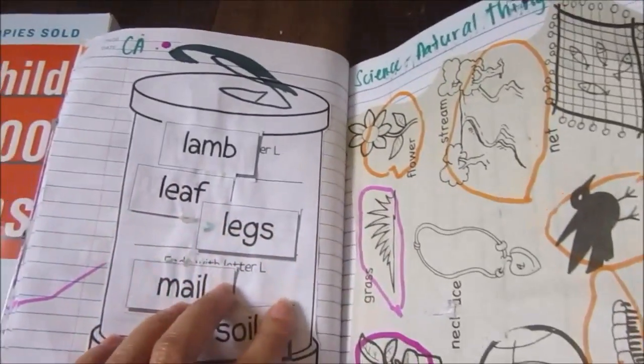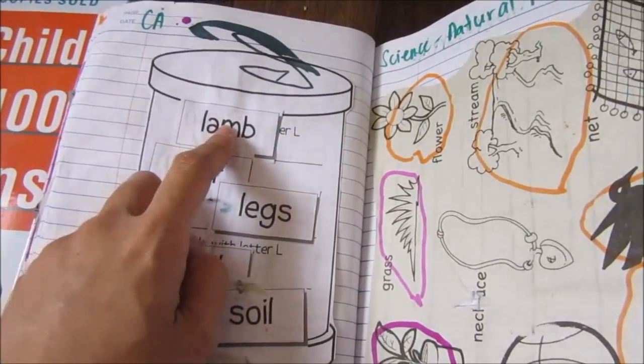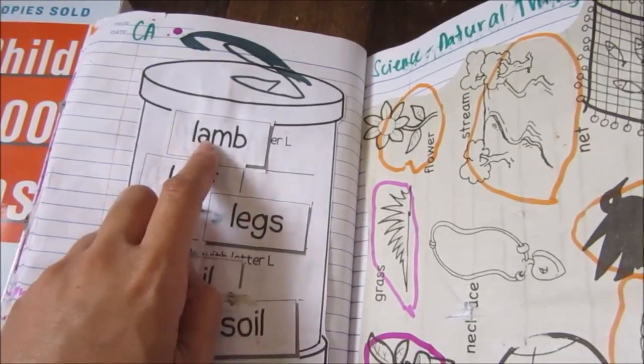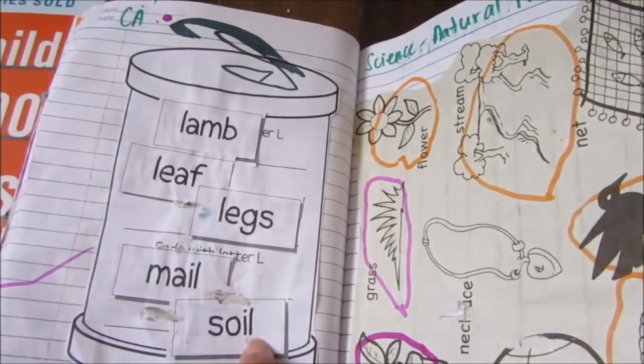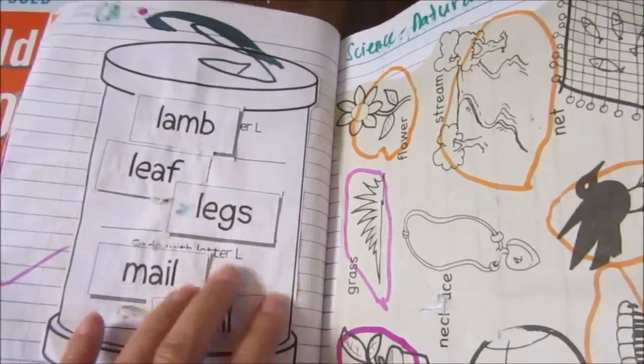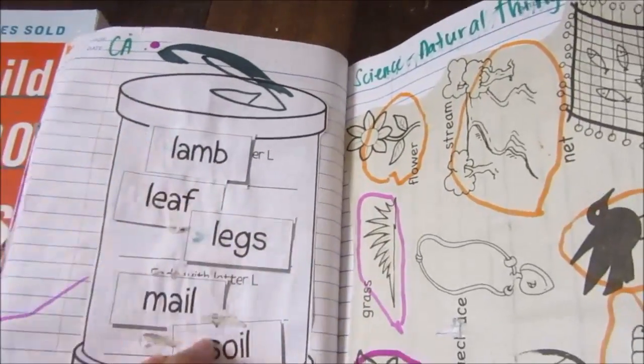This is the first one that we did. This is a can and then he will glue the words that start and end with the letter L. So he will sort them if they're starting with L or ending with L.